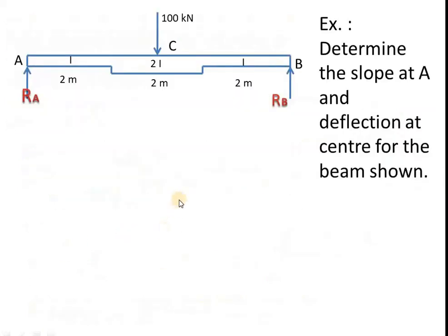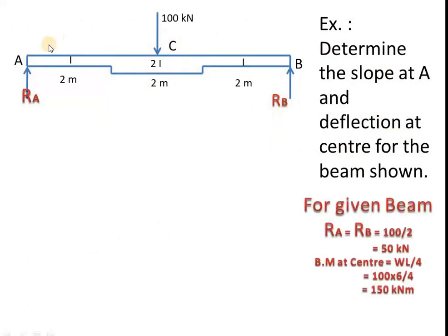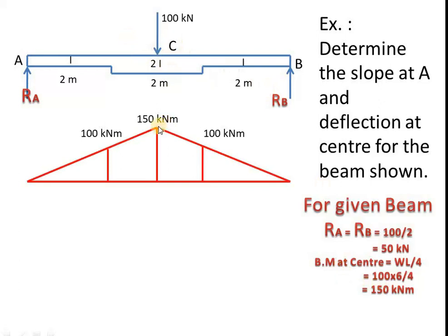Now let us consider one more problem. Determine the slope at A and deflection at center for the beam. The loading is symmetric but EI values are different. Calculating the reaction: for symmetric central loading, RA = RB = total load by 2 = 50 kN each. The bending moment at C is RA × 3 = 150 kNm, which can also be written as WL by 4. The bending moment at the intermediate points will be RA × 2 = 100 kNm on each side.